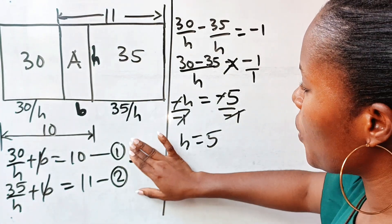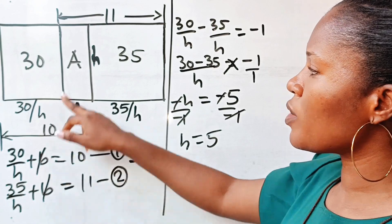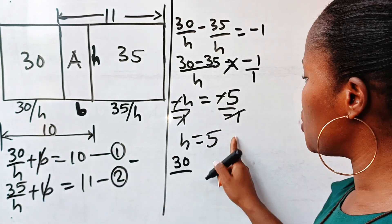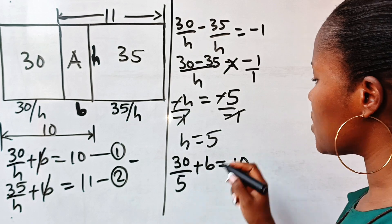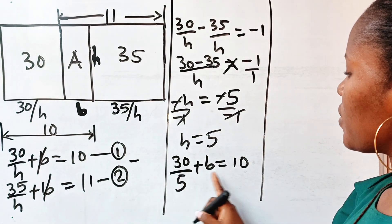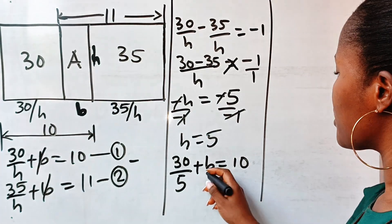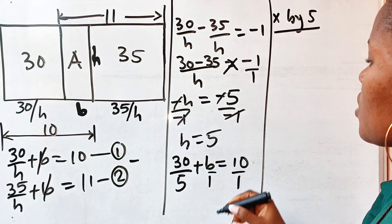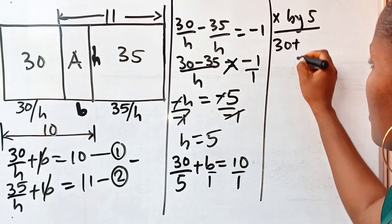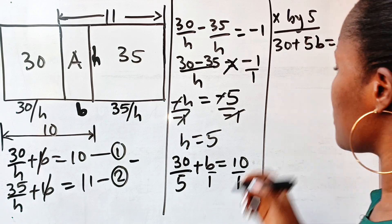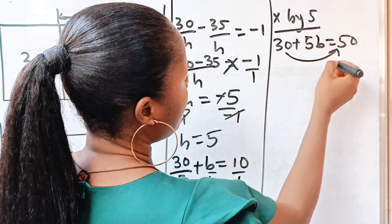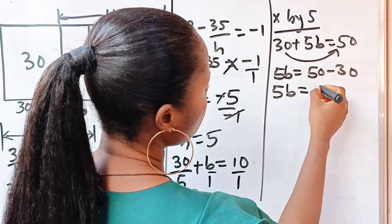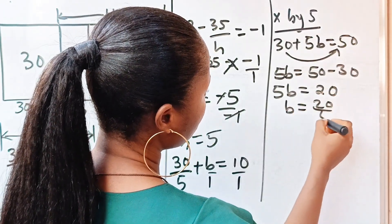Now let us use equation 1 to get the value of b, then solve for the area. From equation 1: 30 divided by h, which is 5, plus b is equal to 10. Multiplying through by 5, we have 30 plus 5b equals 50. So 5b equals 50 minus 30, which is 20, and b equals 20 over 5, which is 4.